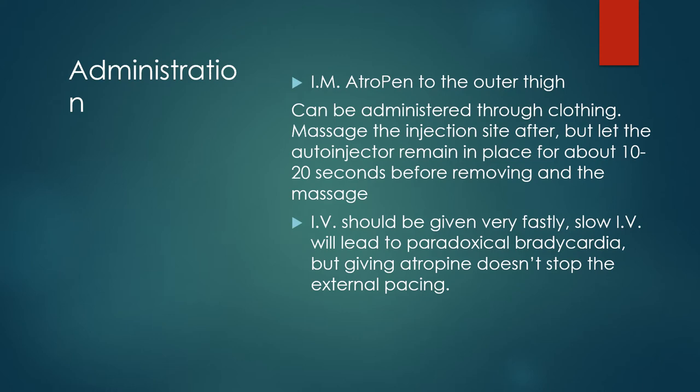For administration, you can give atropine intramuscularly to the outer thigh. For those familiar with the EpiPen, this is the same method — it can be administered through clothing. Massage the injection site after, but let the auto-injector remain in place for about 10 to 20 seconds to ensure the medication has gone in before you remove it and start massaging.